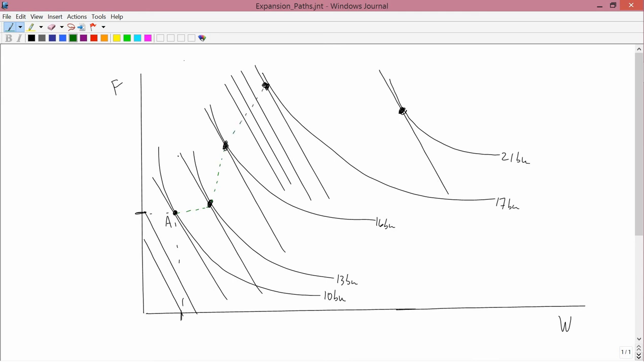We can, if we want to, then connect these cost minimizing dots. It's supposed to be straight. I didn't quite draw that straight. This shows how the amount of water and fertilizer that's optimal to buy changes as output increases.